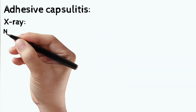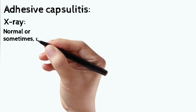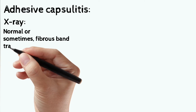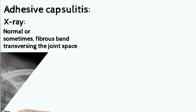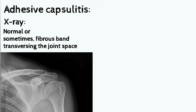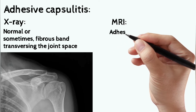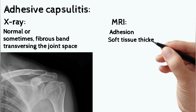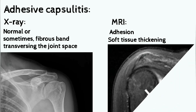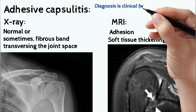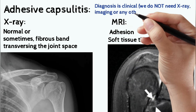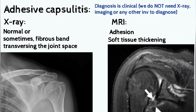In adhesive capsulitis, the x-ray is usually normal, or sometimes we find a fibrous band traversing the joint. Here the x-ray is quite normal looking. MRI of adhesive capsulitis will show adhesion and soft tissue thickening — the white arrow is showing the adhesion and soft tissue thickening. Remember, diagnosis is clinical; we do not need x-ray imaging or any other investigation to diagnose adhesive capsulitis.